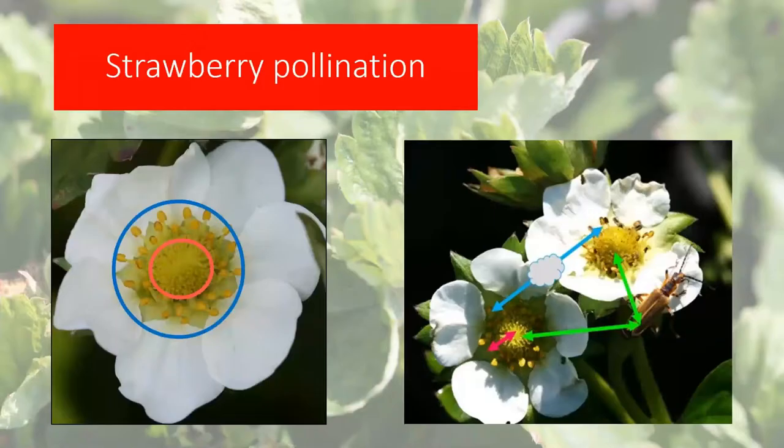Strawberries require complete pollination — each achene developing on the outside of the fruit represents a pollination event. The receptive female part of the flower must receive pollen from either the male region of the same flower or from another flower. When this doesn't happen, those achenes never form, and the fleshy red part of the fruit only swells where achenes are present. This is why you see oddly-shaped berries — it's often a pollination problem and fairly easy to distinguish from a flower problem.